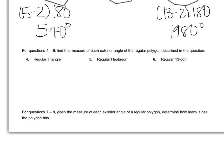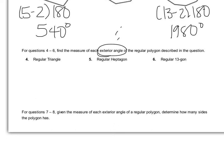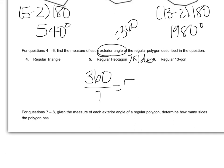Number 5 says to find the measure of each exterior angle of the regular polygon. We know exterior angles always add up to 360 degrees. This time it wants one of them. A heptagon has 7 sides, so we do 360 divided by 7, which gives about 51.4 degrees.